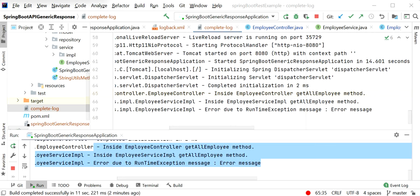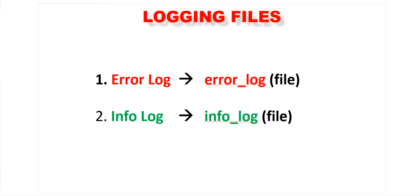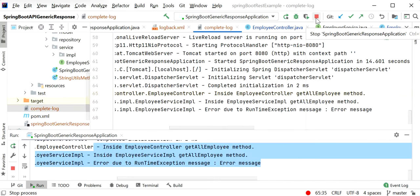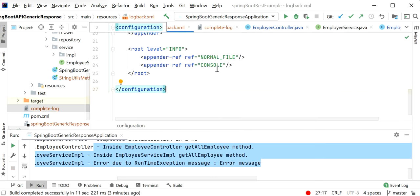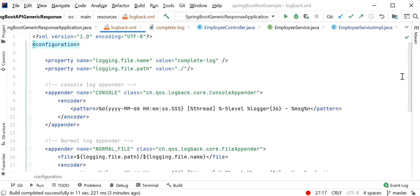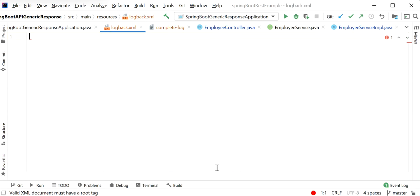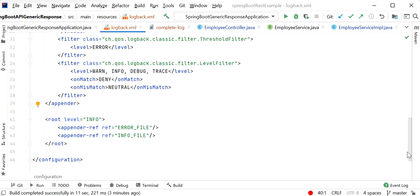Let's do some improvement and use two different files for logs. To create two log files, we just need to do some configuration inside our logback.xml file. It will automatically create two log files — one for error logs and one for info logs. Error logs will go into the error log file, and info logs will be printed into the info log file. Then it will be easy to find error messages — just go and check the error log file and fix it through code changes.